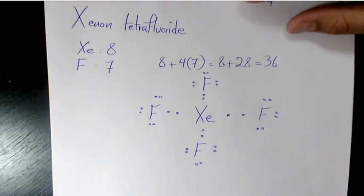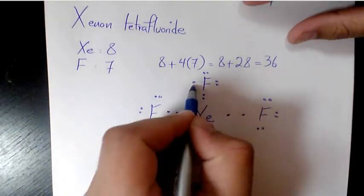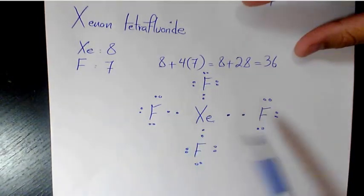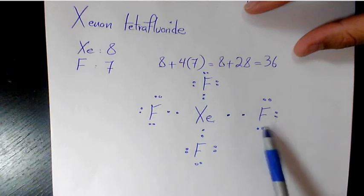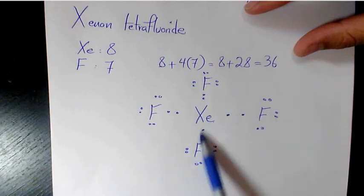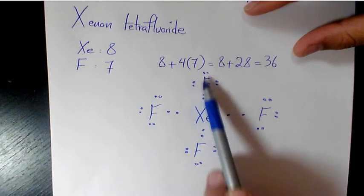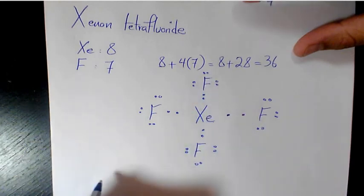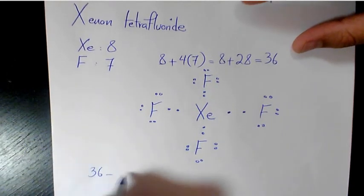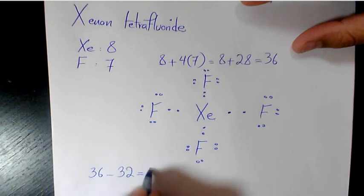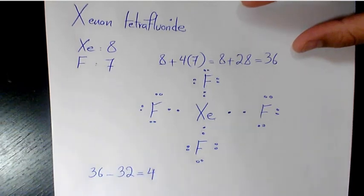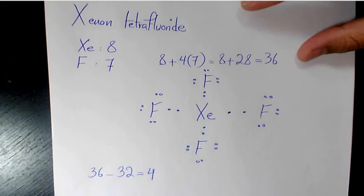Then we need to figure out how many electrons are still remaining. We've placed 32 electrons on the surrounding atoms. 36 minus 32 is 4, which means we still have four more electrons available.